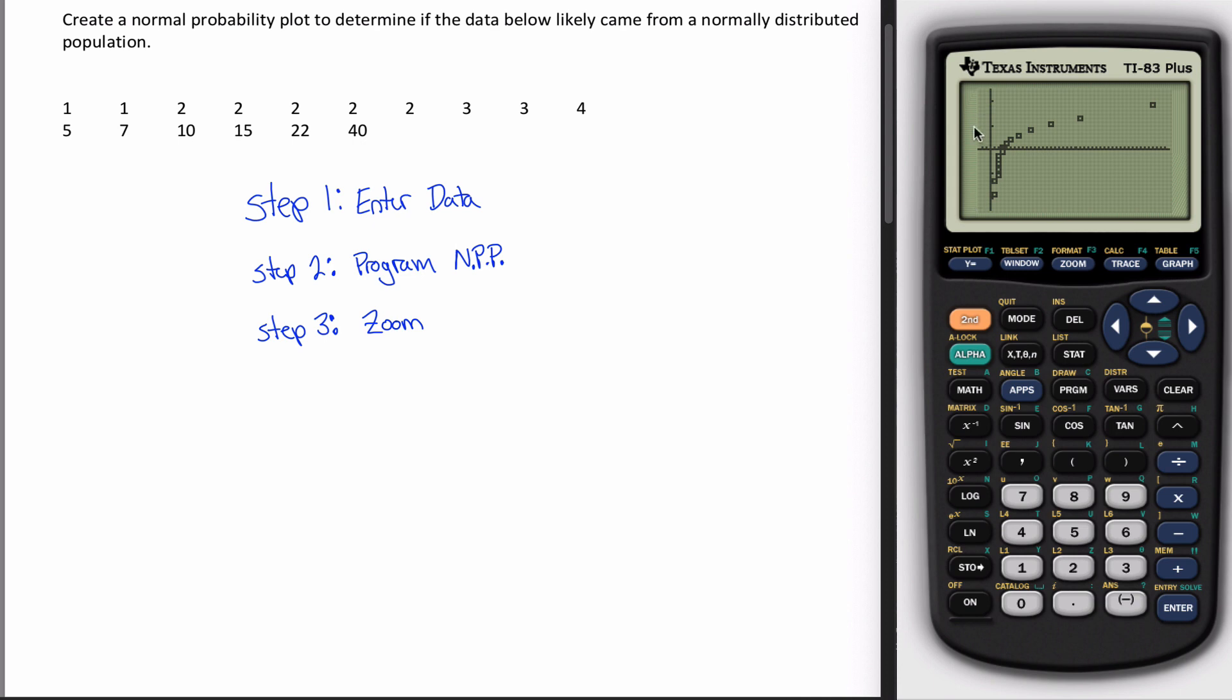So I can use the trace key to jump from one observation to another. Maybe I'll just pick one here. Here's one. X equals five. Looking at this observation here. In my normal probability plot, that shows up right here.